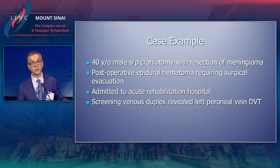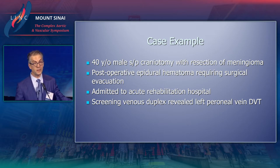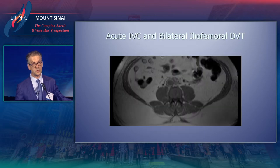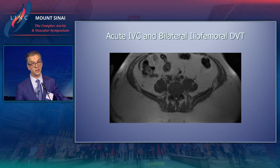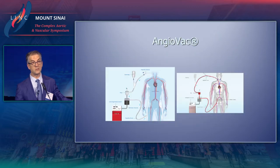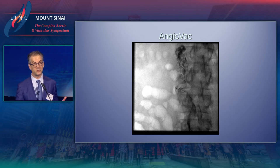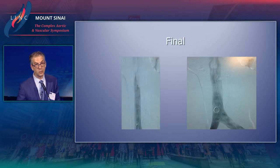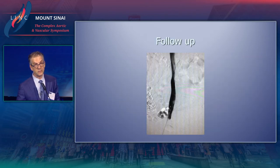Next, a patient status post craniectomy for meningioma who had an epidural hemorrhage, then was admitted to our rehab hospital — a tremendous source of DVT cases. She had a left peroneal vein DVT, and a filter was placed. The MR showed extensive IVC and iliac vein thrombus. We used the AngioVac, a large 22 French suction thrombectomy catheter. These patients go on veno-venous bypass, and we cleaned up from a jugular approach. It works very nicely but does take some time, and we get very nice product from it.